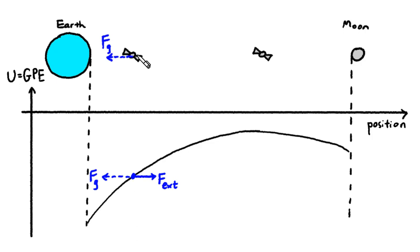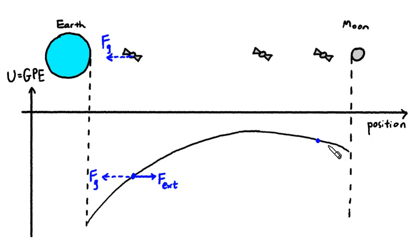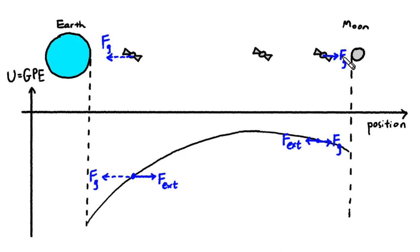So when the spacecraft is at that position, it experiences a leftward gravitational pull — basically Earth's pull is stronger than the Moon's pull. What if the spacecraft is further toward the Moon? Then to increase its GPE, you have to move it leftward. So the external force is leftward, and the hidden field force must be rightward. At that position, the Moon's rightward pull is stronger than Earth's leftward pull, so the resultant gravitational pull is rightward.